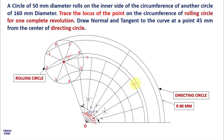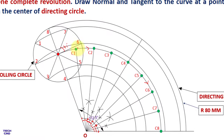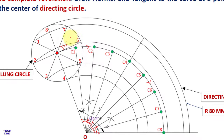Give the points the names c1 to c8. Take the compass, put the needle at c1, open it to the radius of the rolling circle, and mark an arc — this arc comes from point 1 on the rolling circle — and mark this point as p1.